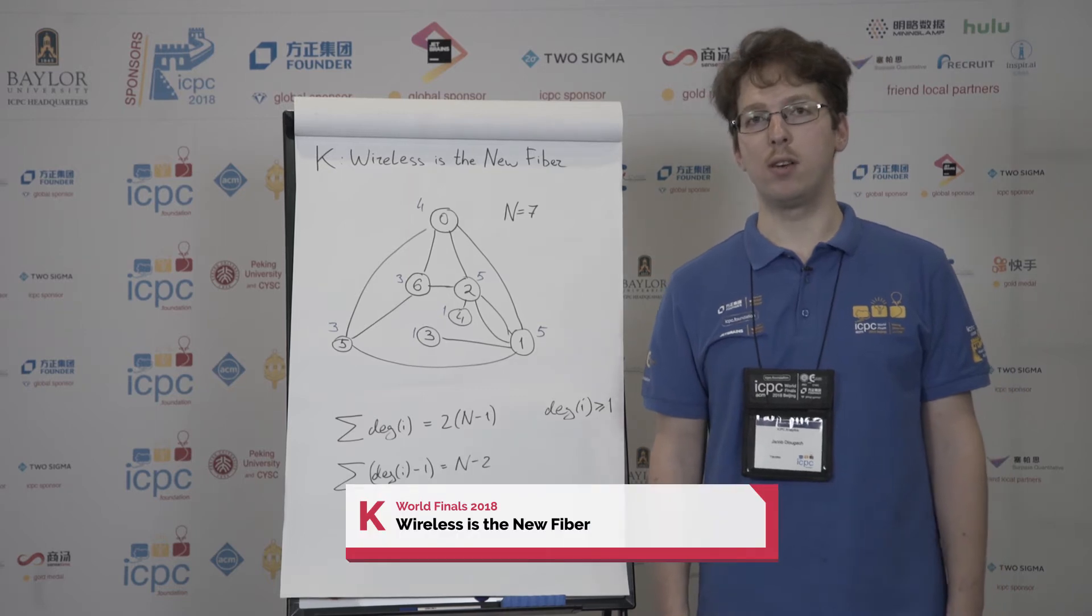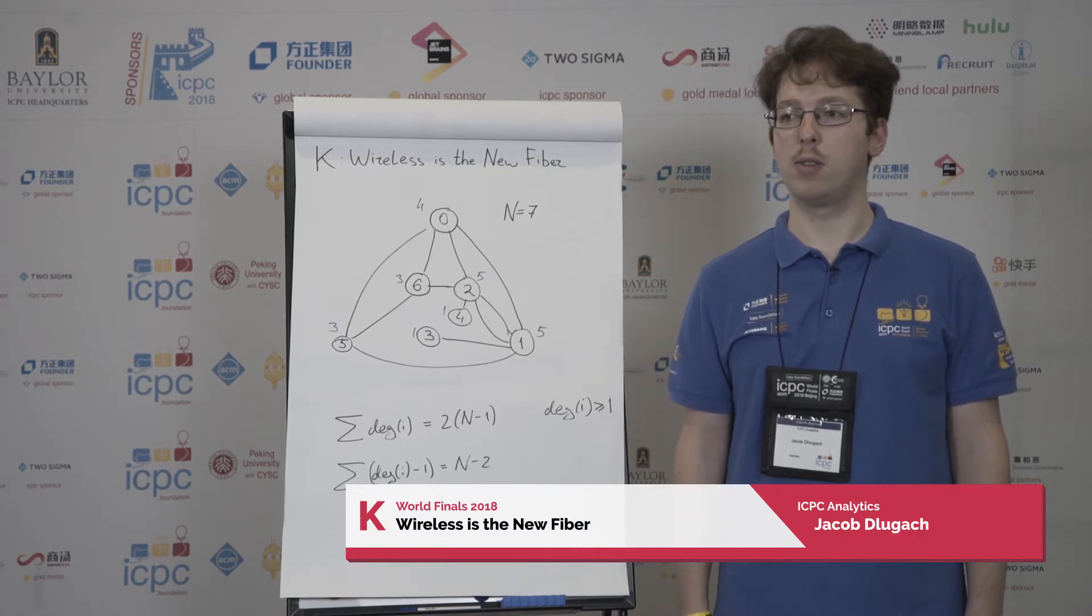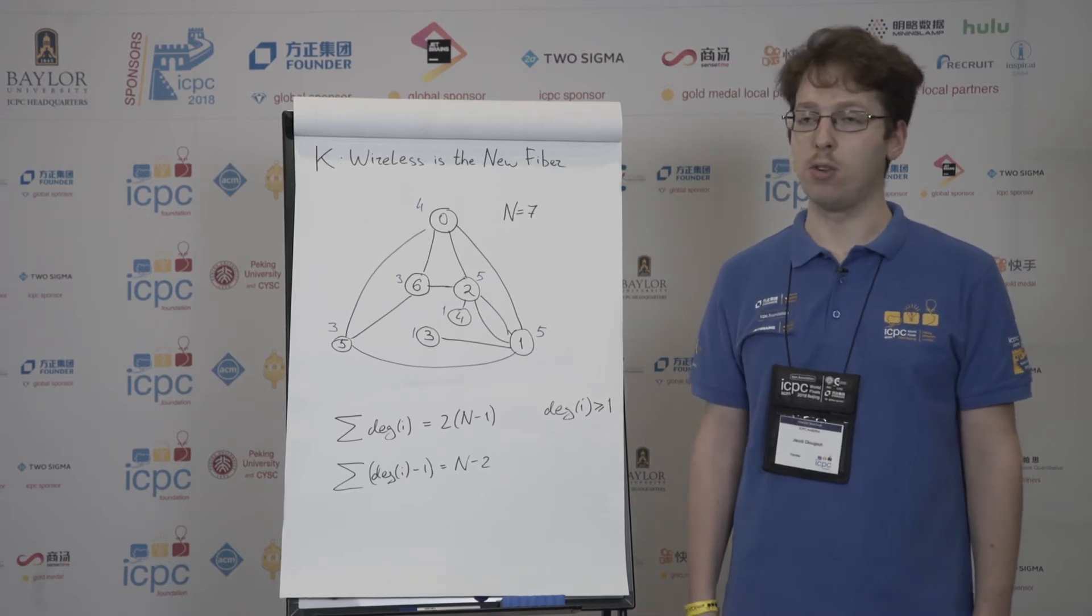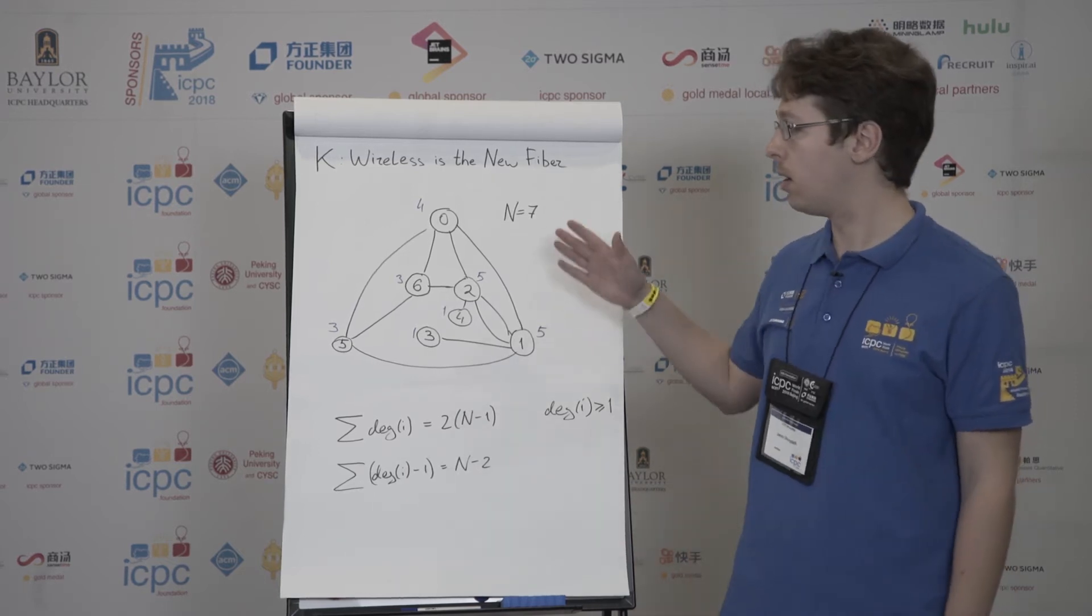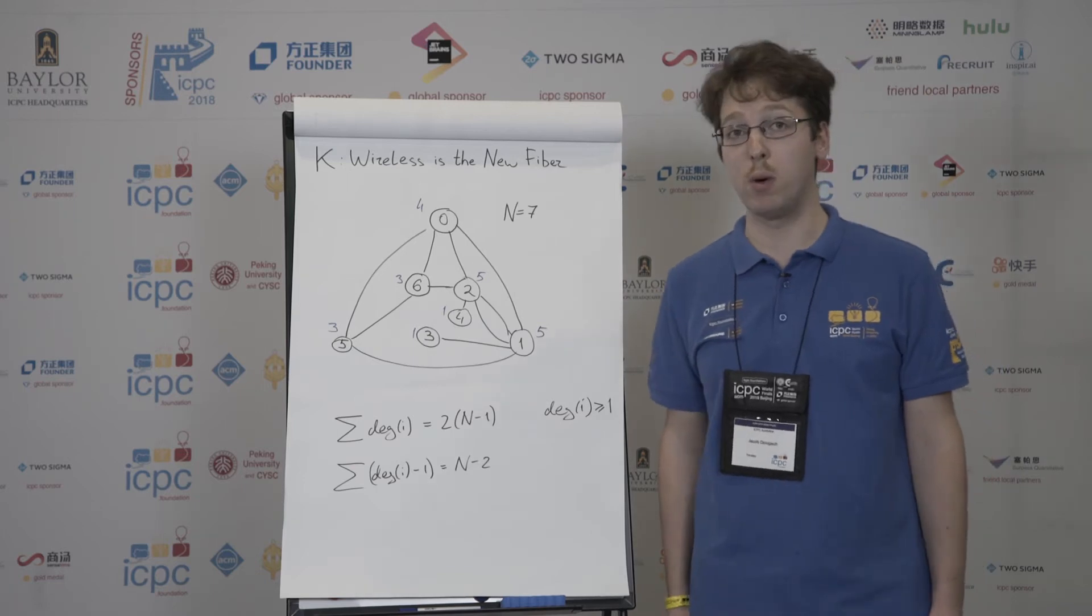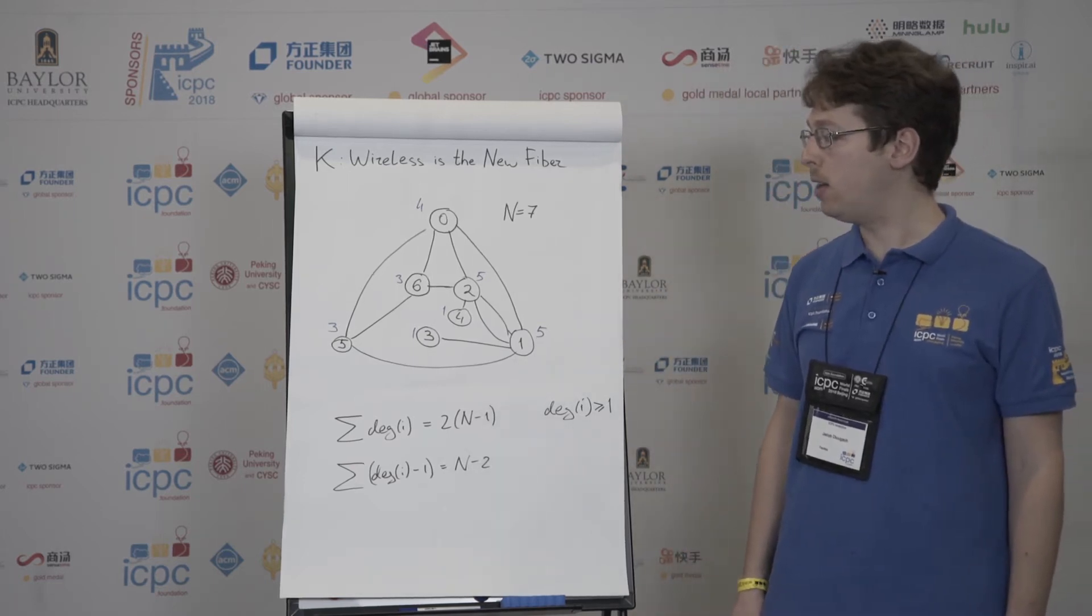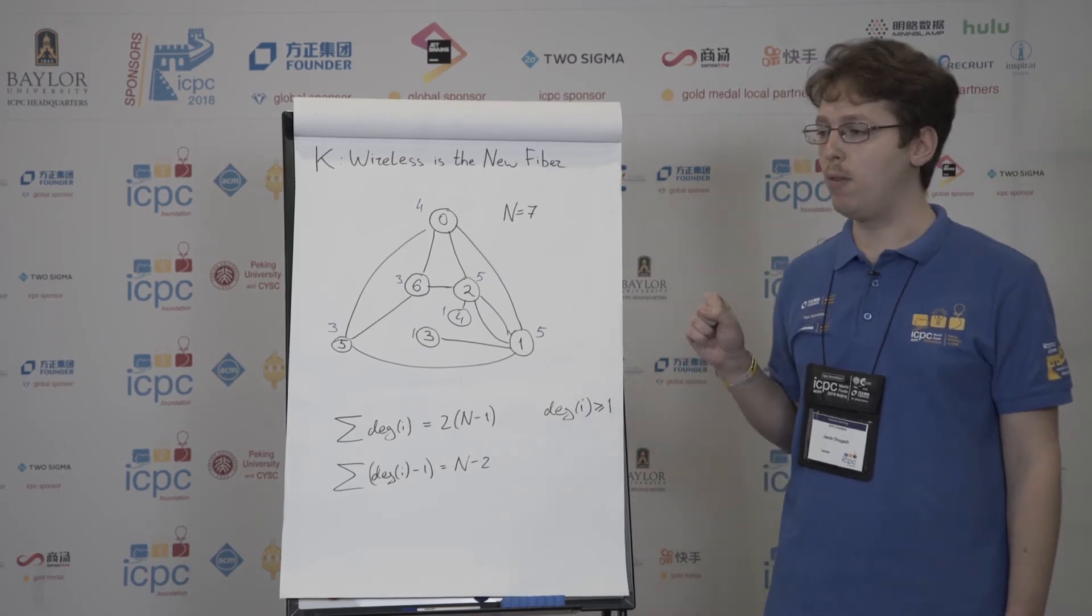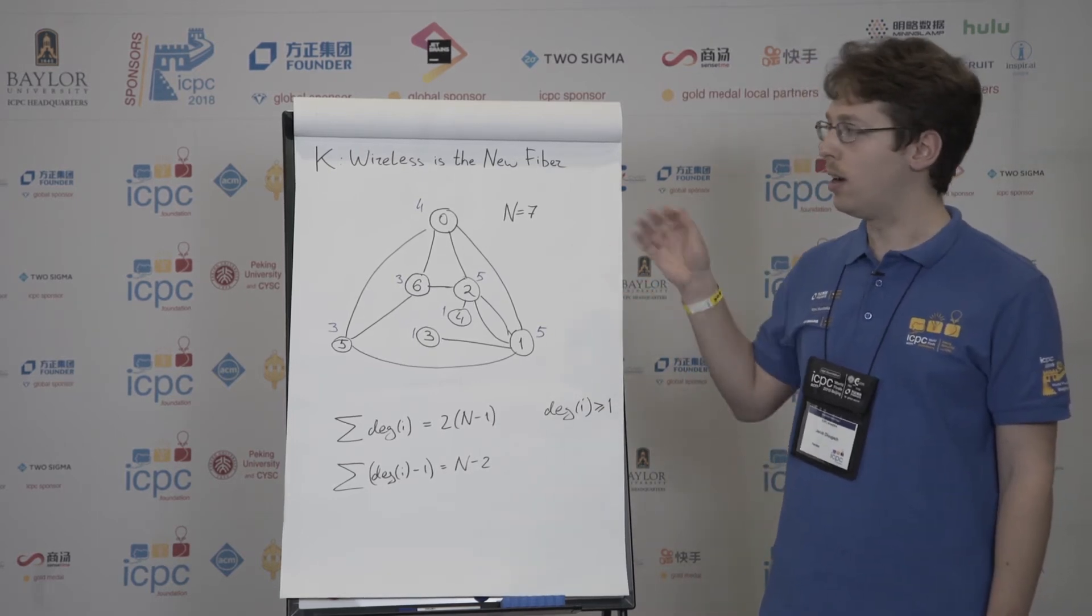In this problem, we're given a graph where some vertices, pairs of vertices, can be connected with more than one edge. And we need to construct a tree that has as many vertices of same degree as this graph.